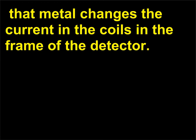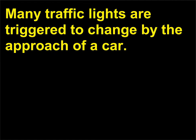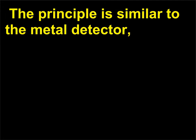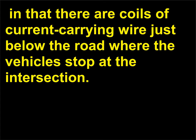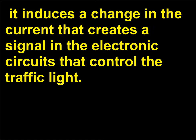How do traffic lights at car intersections know when a vehicle is present? Many traffic lights are triggered to change by the approach of a car. The principle is similar to the metal detector, in that there are coils of current-carrying wire just below the road where the vehicles stop at the intersection. When a large enough amount of metal passes over the coil, it induces a change in the current that creates a signal in the electronic circuits that control the traffic light.